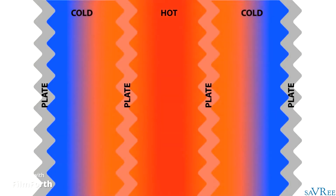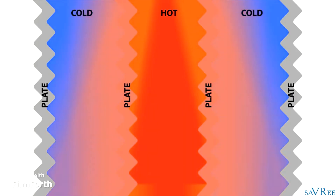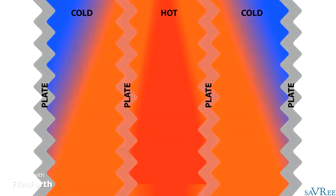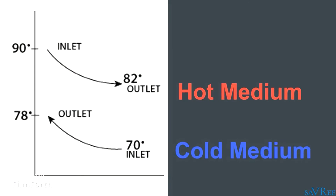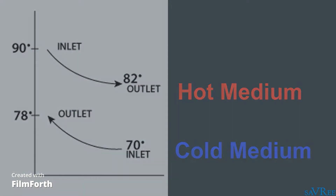Due to the close proximity of the flowing mediums, heat is exchanged between them. The hot medium heats up the plate, and the plate passes some of this heat to the cold flowing medium. Thus the hot medium temperature decreases, whilst the cold medium temperature increases. But what makes plate heat exchangers so efficient compared to other types, such as the shell and tube type?